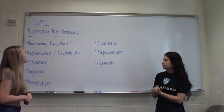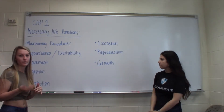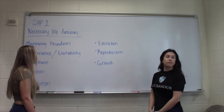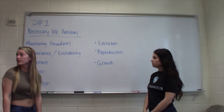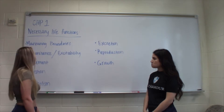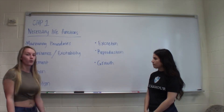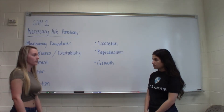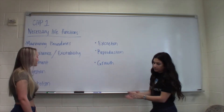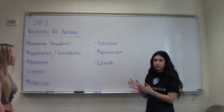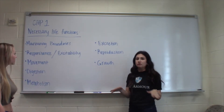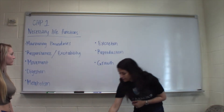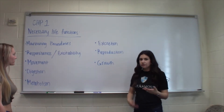Maintaining life functions: you have to maintain boundaries, basically separating yourself from the outside environment — you don't want your blood free-floating, so you have blood vessels. Responsiveness and excitability means recognizing a change in the environment and acting upon it. Movement gets you from point A to point B. Digestion breaks down food and absorbs nutrients. Metabolism is the sum total of all chemical reactions in your body. Excretion removes waste. Reproduction means your body reproduces cells, and growth refers to increase in size.